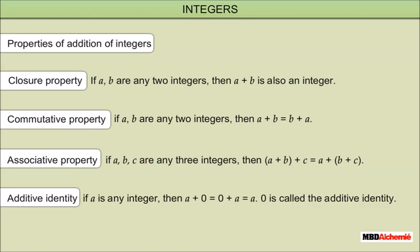Additive identity: if A is any integer, then A plus 0 equals 0 plus A equals A. Zero is called the additive identity.